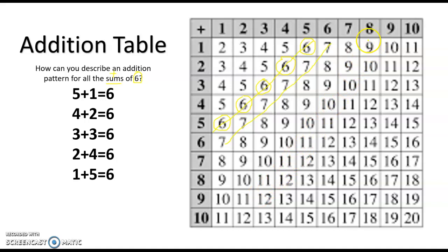Now, that means that to get 6 for each fact, we have to take away 1 for the first addend and add 1 to the second addend. So if I look at my facts all the way down,